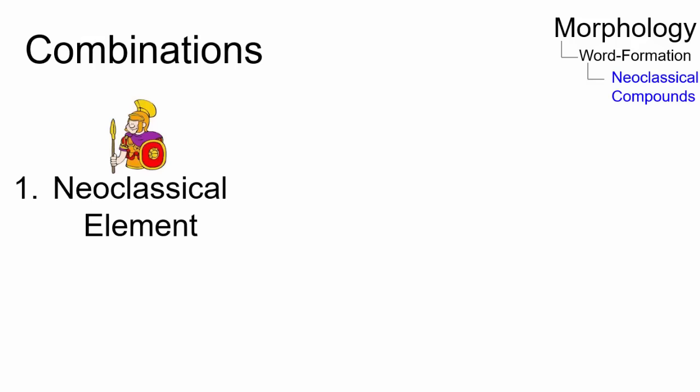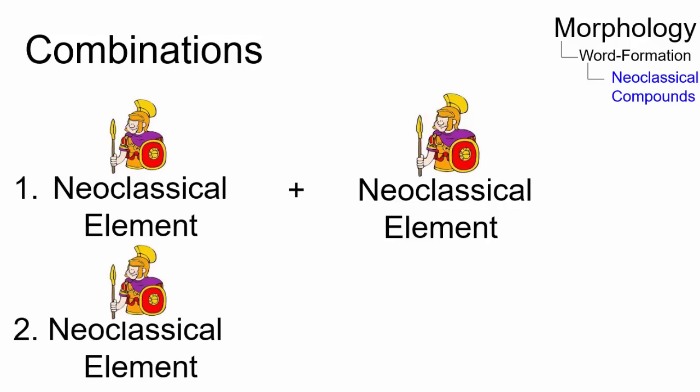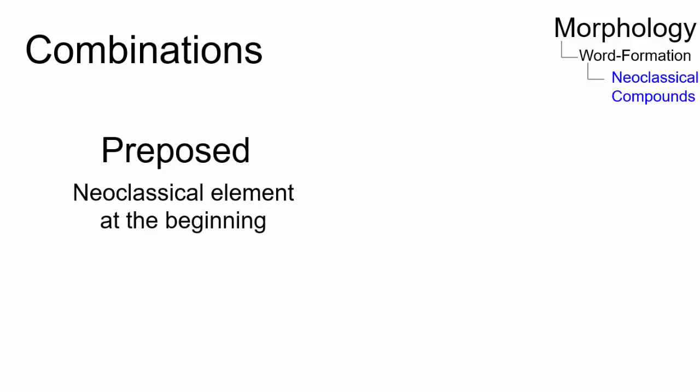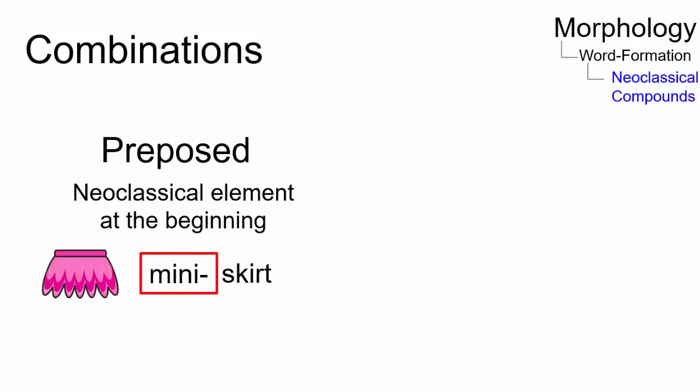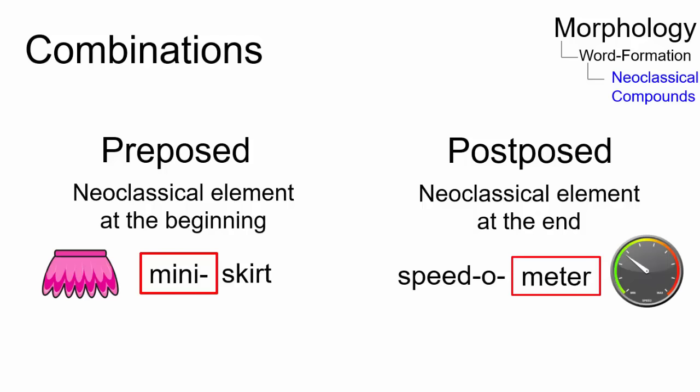Neoclassical elements tend to appear not only in combinations with one another, but also with native English words. They may occur initially making pre-post compounds, like in miniskirt, or finally making post-post compounds, like in speedometer.